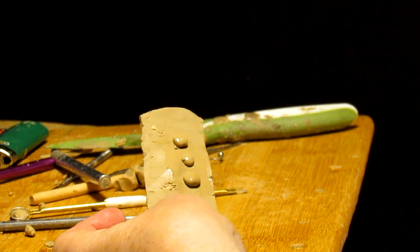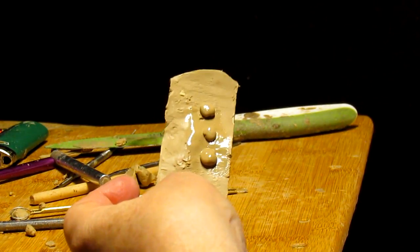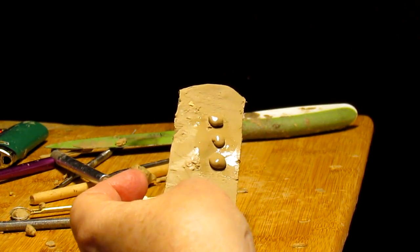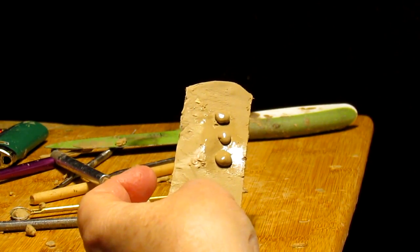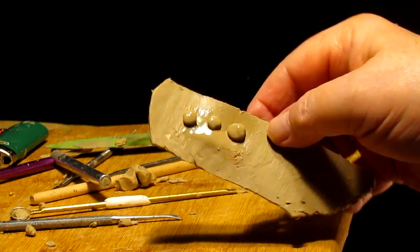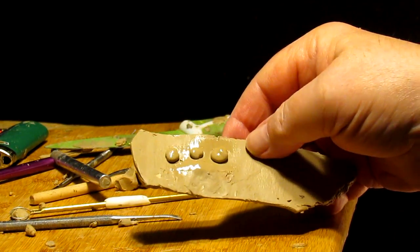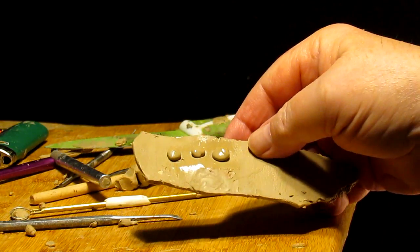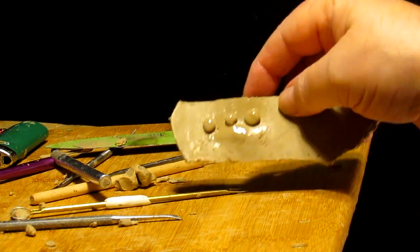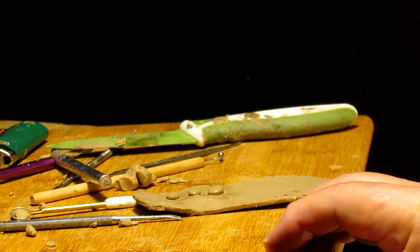What happens is in the casting process, the texture you have on the clay will retain whatever texture it is. So if it's smooth and shiny, it'll come out the same in the casting.